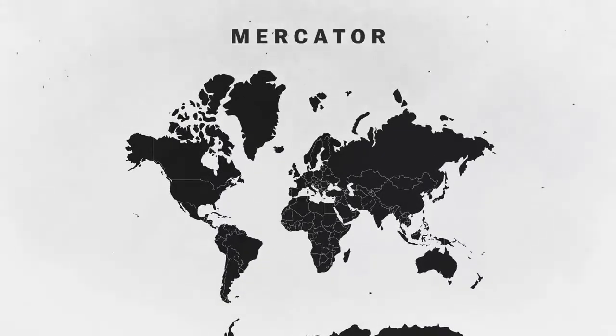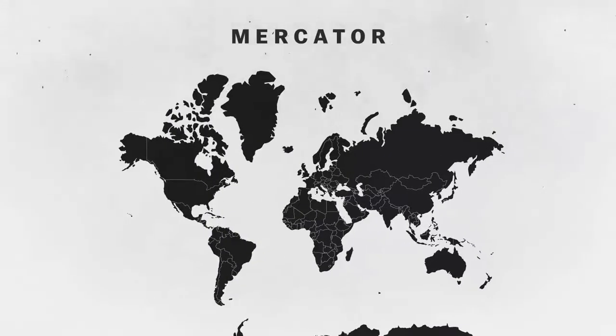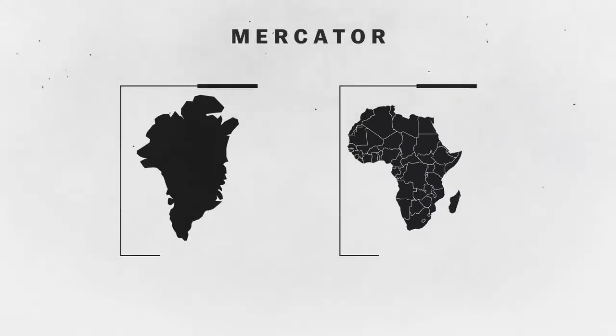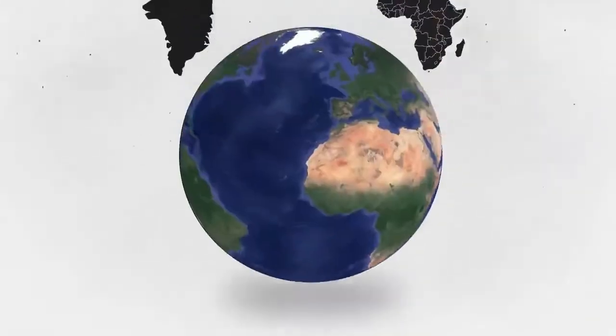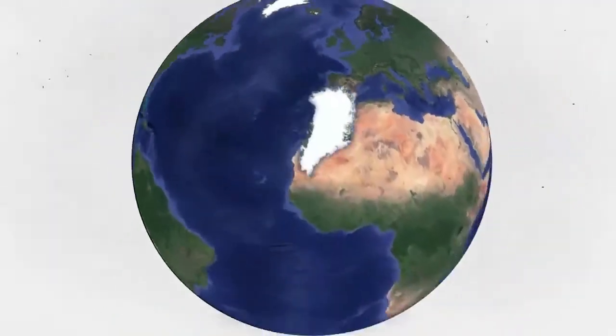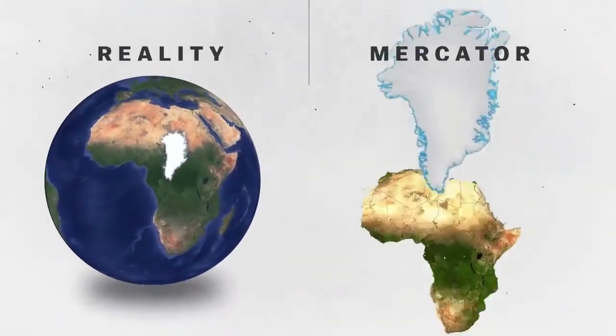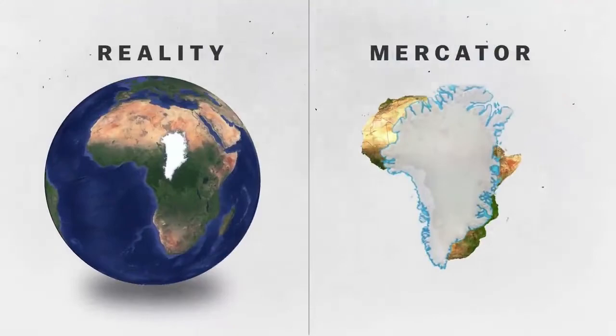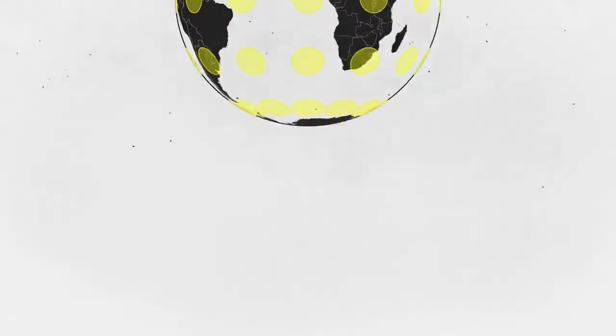Where the Mercator fails is its representation of size. Look at the size of Africa as compared to Greenland on the Mercator map. They look about the same size, but if you look at a globe for Greenland's true size, you'll see that it's way smaller than Africa by a factor of 14.